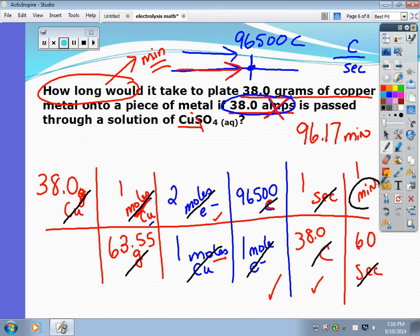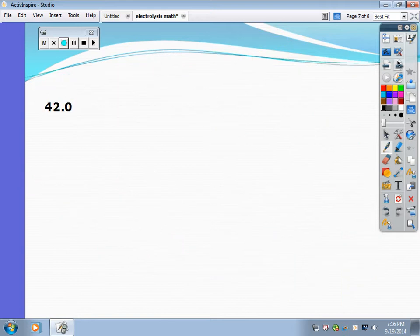And so if you look, I'm not going to talk about sig figs too much here, but if I've got 38 grams, 3 sig figs, and 38 amps, 3 sig figs, 38.0, 38.0, that means this needs to be 3 significant figures. What's the 7 do to the 1? It rounds it up. So my true answer would be 96.2 minutes. But at this point, I want you to understand the process.